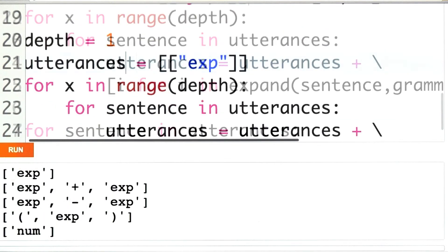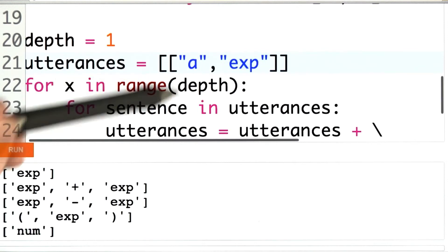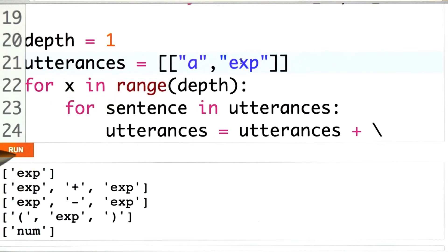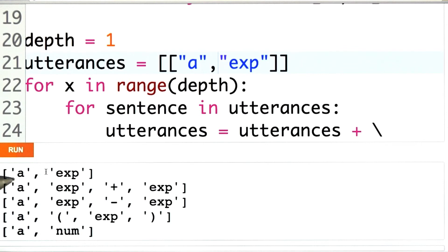And in fact if we go back up here and change this to a expression, the example we worked through in the comments, we get the expected output. A is unchanged because there's no rewrite rule in our grammar for dealing with it. But a expression becomes a expression plus expression, a expression minus expression, a open expression close, and a num.